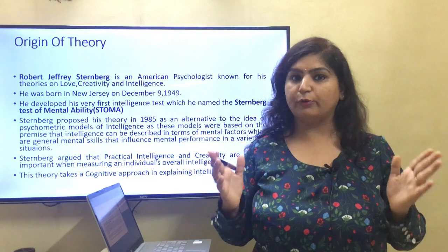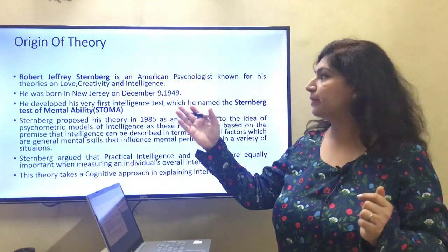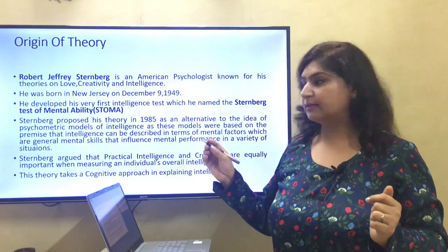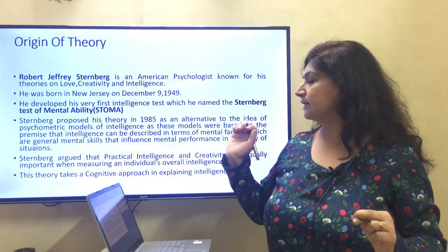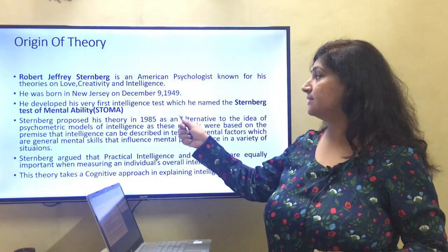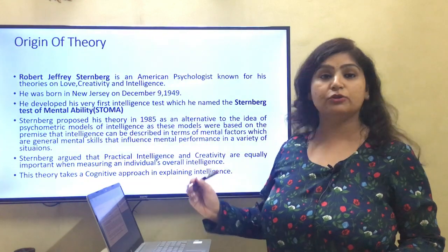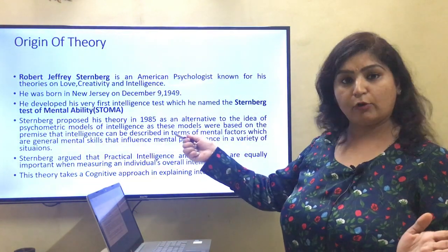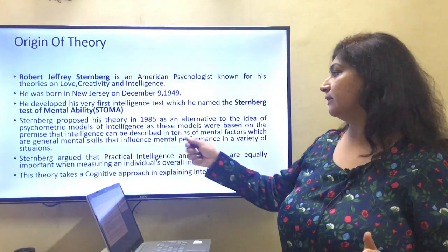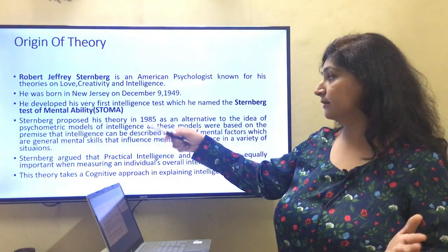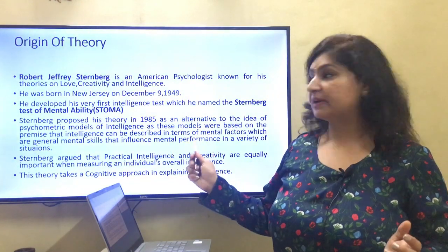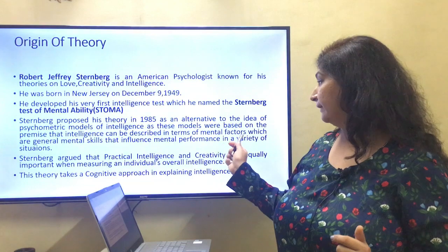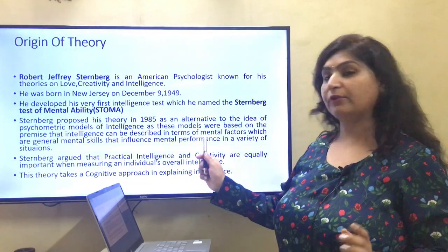Now let's study his theory in detail. His name is Robert Jeffrey Sternberg. He was from America and was well known for his theories on love, creativity, and intelligence. He was born in New Jersey on December 9. He developed his very first intelligence test, which he named the Sternberg Test of Mental Ability. His theory was an alternative to psychometric models, which described intelligence in terms of general mental factors influencing performance in various situations.